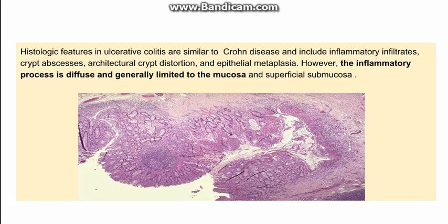On microscopy, ulcerative colitis is similar to Crohn's disease in some respects but different in others. Similar features include the presence of inflammatory infiltrates, crypt abscesses, crypt distortion, and epithelial metaplasia. However, the inflammatory process in ulcerative colitis is diffuse and not transmural — the inflammation is limited to the mucosa and superficial submucosa. In Crohn's disease, by contrast, the inflammation is transmural, extending from the mucosa all the way to the serosa.